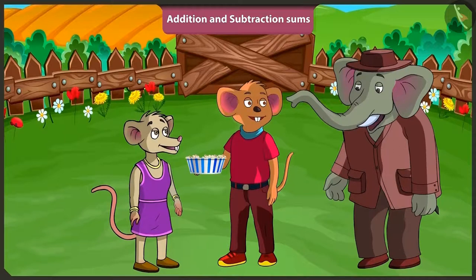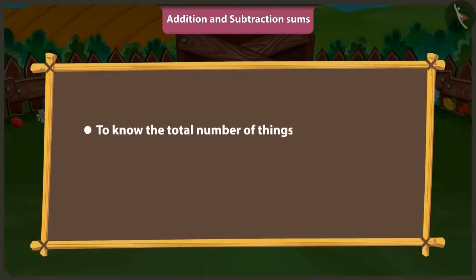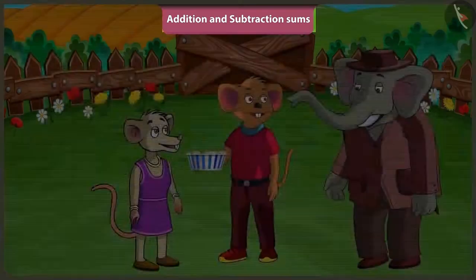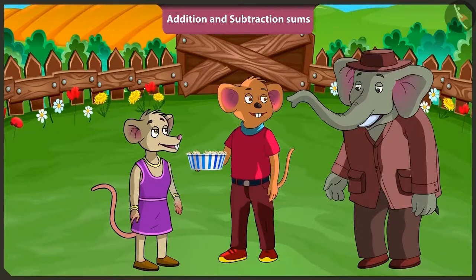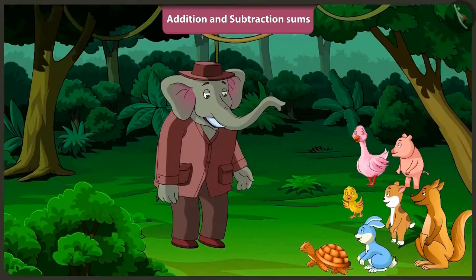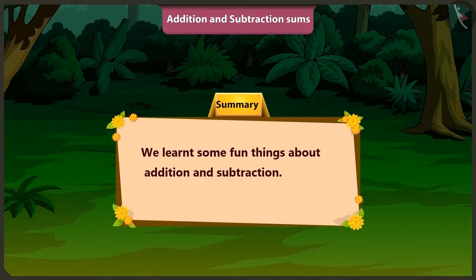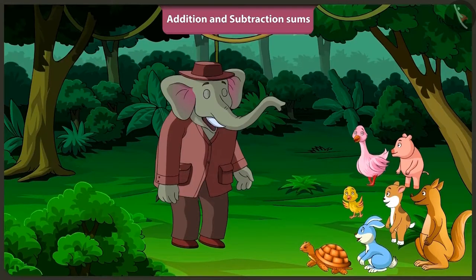Children, now you would have understood when to do addition and when to do subtraction. Yes, Uncle. When we have to know the total number of things, we have to do addition. And when we have to know how many things are left from the total things, we have to do subtraction. Well done, children. Now you both play and I will go. Bye, Uncle. Friends, today we learned some interesting things related to addition and subtraction of two-digit numbers. In the next video, we will learn about tracing of things in our surroundings.